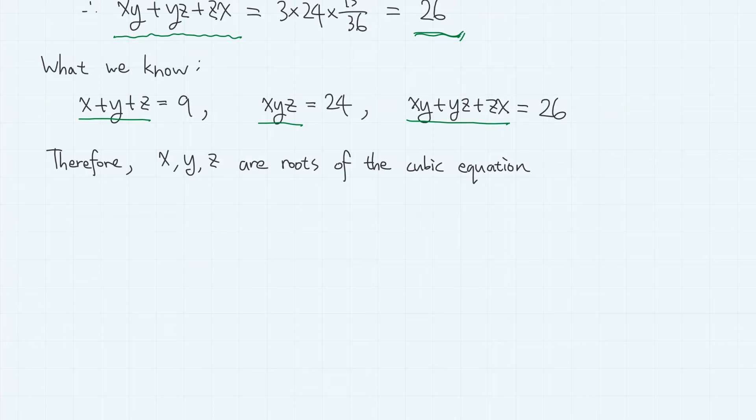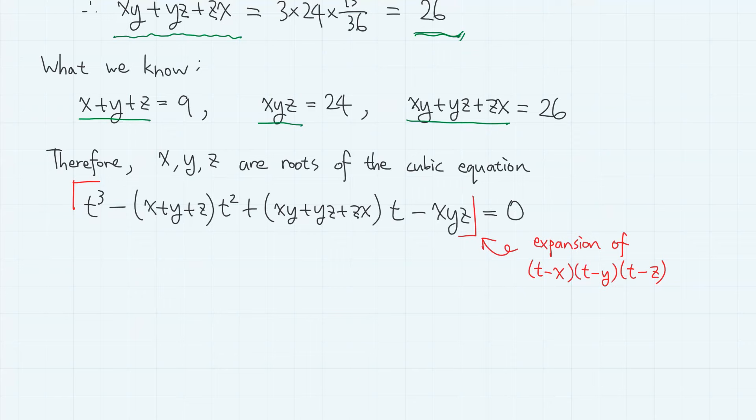That is, x, y, and z are 3 roots of the cubic equation t cubed minus (x plus y plus z) t squared plus (xy plus yz plus zx) t minus xyz equals 0, because the left-hand side is the expansion of (t minus x)(t minus y)(t minus z).